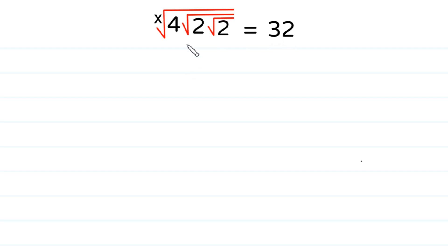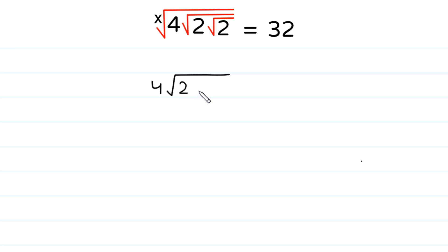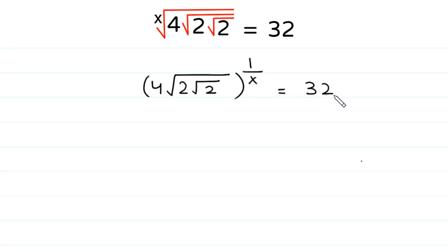First of all, we write it in exponential form like this: 4 times square root of 2 times square root of 2, to the whole power 1 over x, is equal to 32.